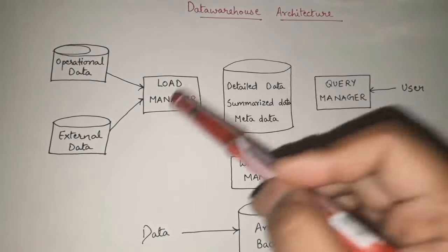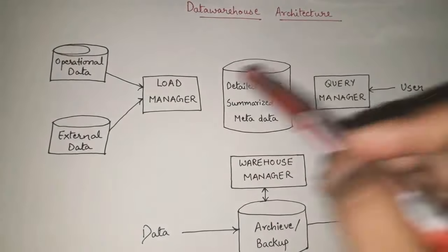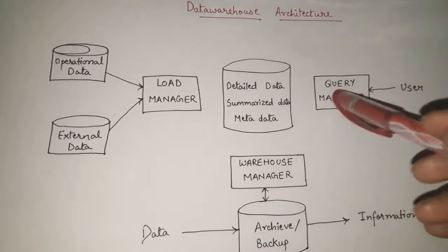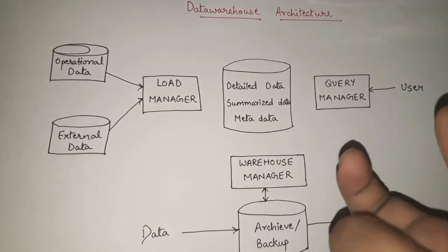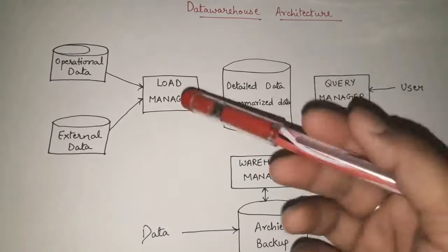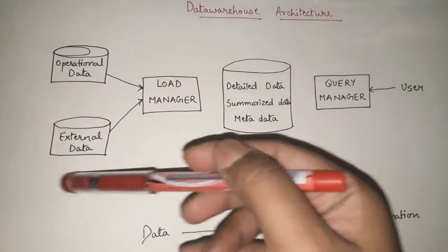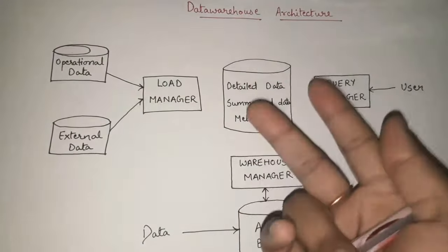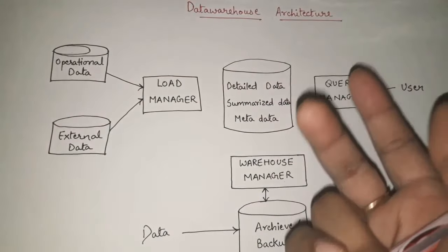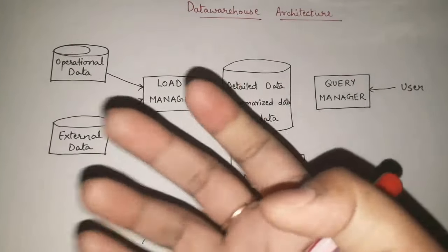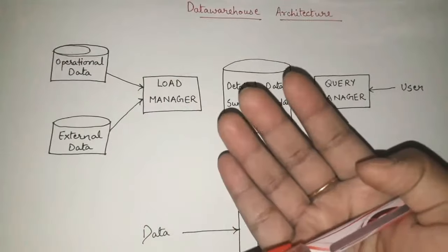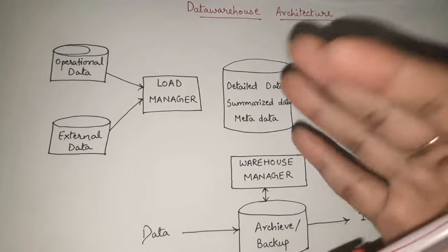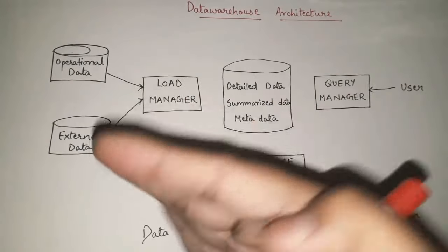Whenever this bulk of data comes in, it collectively goes to the Load Manager. We have three main types of managers here: Load Manager, Query Manager, and Warehouse Manager. These three are the heart of this architecture. The Load Manager performs two important things: first, loading the data from external sources, and second, performing data transformation.